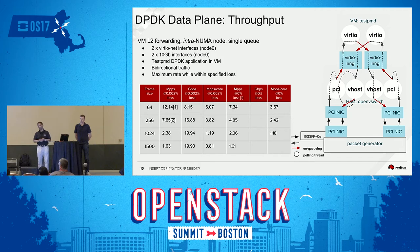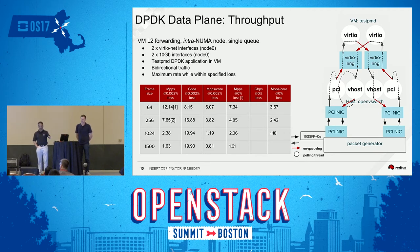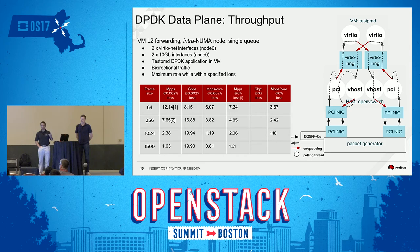With SRIOV, you can get close to line rate — you can get 9.6 or 9.3 Gbps on a 10-gig interface. We don't like to talk in terms of Gbps because packet size and frame size comes into play. The smaller the frame size, the lower the Gbps — it's simple math. Take small packet sizes and multiply by how many million packets per second and you'll get the Gbps. Large packet sizes give you more Gbps with fewer packets per second.